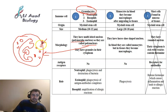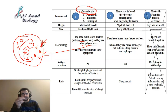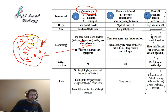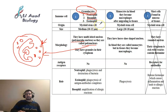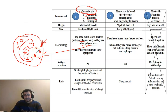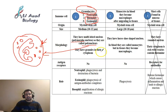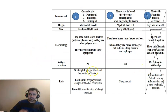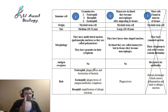Granulocytes are classified into three types according to the nature of the chemical substances inside their granules. If the chemical substance inside the granules is basic, these cells are called basophils. If the granules are neutral — neither acid nor base — they are called neutrophils. And if the granules contain acidic substances, they are called eosinophils. So we have three types of granulocytes: neutrophils, basophils, and eosinophils.